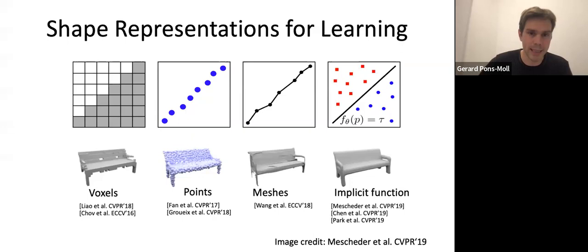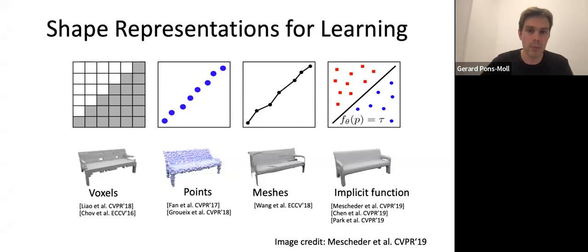More recently, people have started looking at implicit surfaces, basically training neural networks to predict these implicit surfaces. This talk will be mostly about implicit representations, and we will see some of the advantages and disadvantages of this representation.